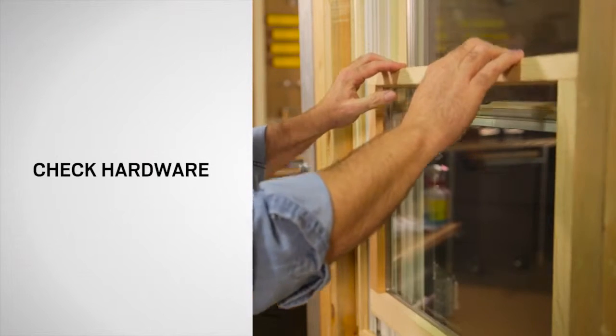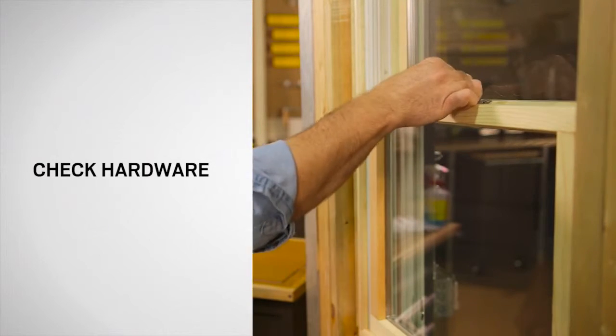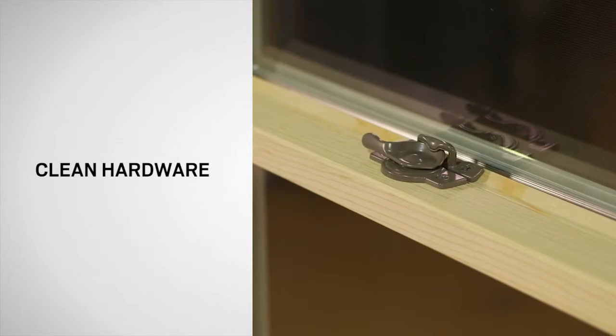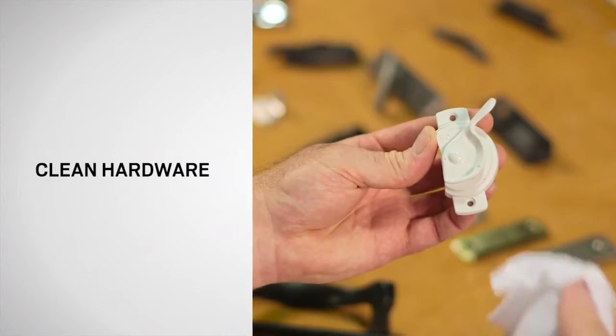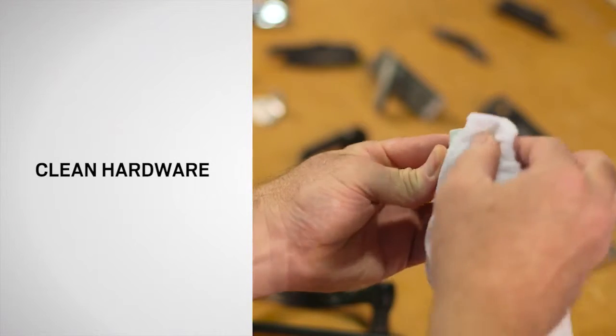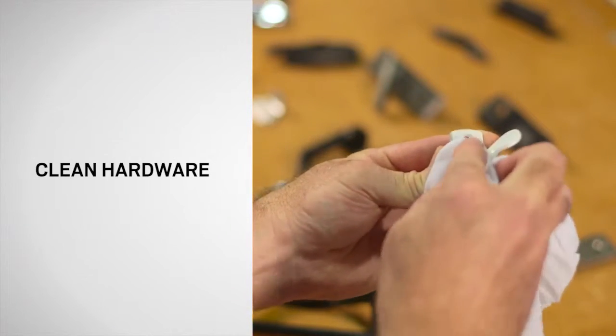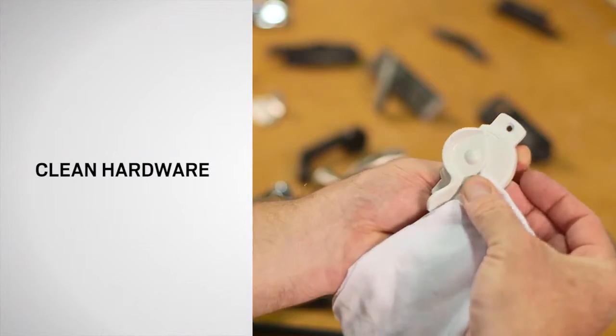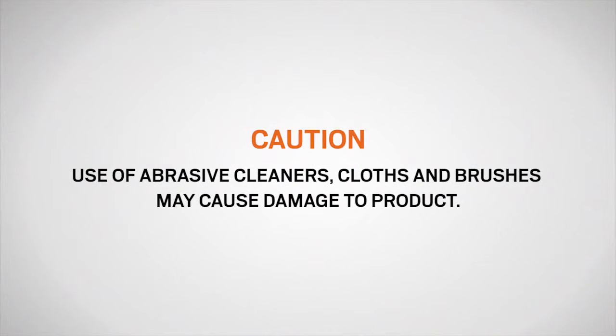Make sure your windows hardware is functioning properly. Before cleaning the hardware, you may want to remove it from the window for ease. All hardware except bronze can be washed with a soft cloth using a mild detergent. Fully dry hardware with a clean soft cloth. Use of abrasive cleaners, cloths and brushes may cause damage to the product.